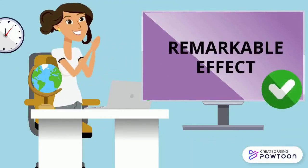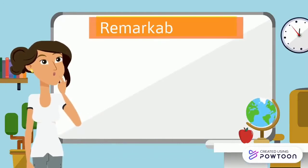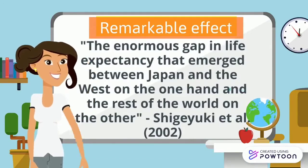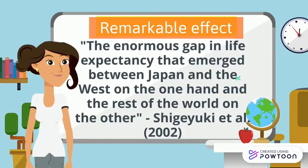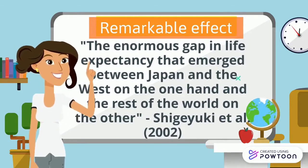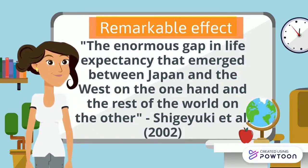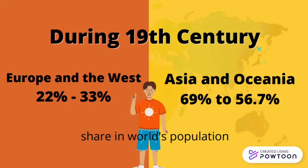A remarkable effect of the demographic transition, according to Shigeyuki et al. in 2002, is the enormous gap in life expectancy that emerged between Japan and the West on the one hand, and the rest of the world on the other. During the 19th century, Europe and the West had an increase in share in the world's population from 22% to 33%, while Asia's contribution dropped from 69% to 56.7%. India and China suffered from economic stagnation and decline during that time.